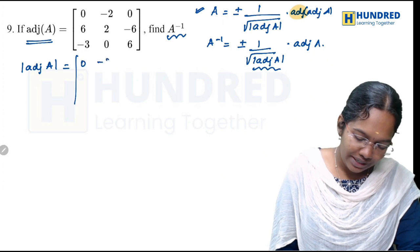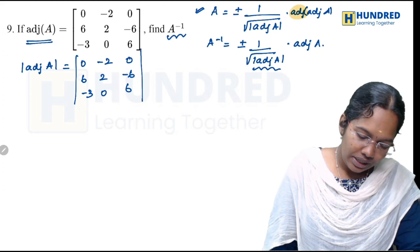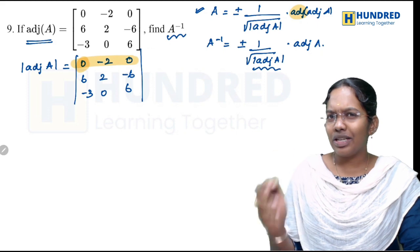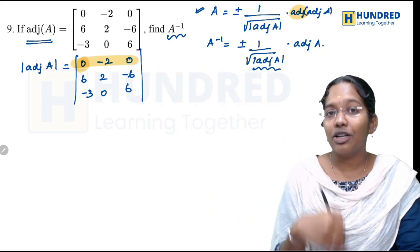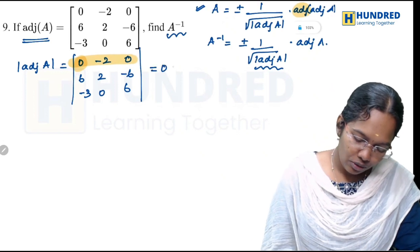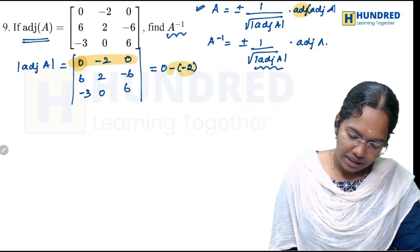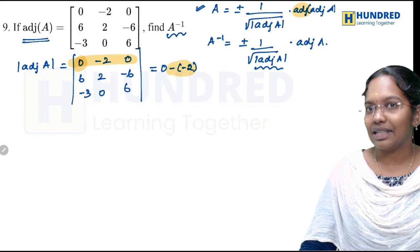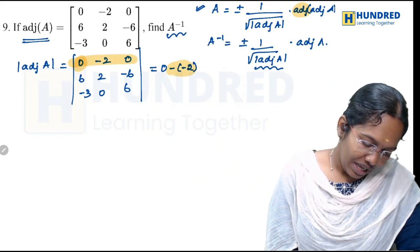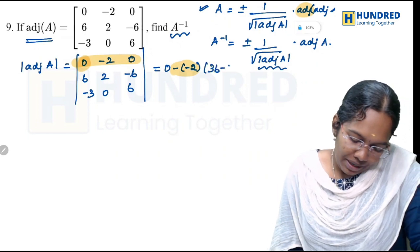To find the A inverse value, we have the matrix values: 0, minus 2, 0, 6, 2, 6, 3, 0, 6. To find the determinant, the first row starts with 0. Since the first element is 0, we move to the next element, which is minus 2. We find the minor for minus 2, which involves the row and column giving 36 minus 18.